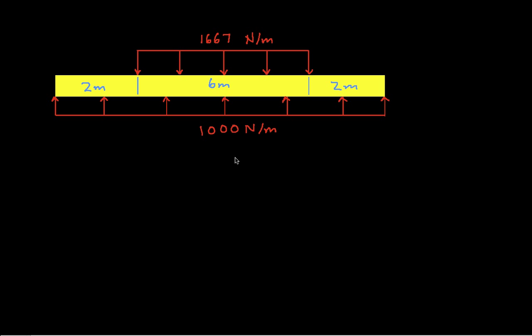Here we have an example. We have our beam, and it has a distributed load on the top which is 1,667 newtons per meter. It has a distributed load on the bottom pushing up, which is 1,000 newtons per meter. What we want to do is find the shear diagram, the function v(x), and the moment diagram, which is the function m(x).